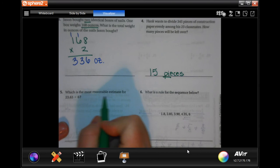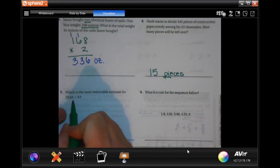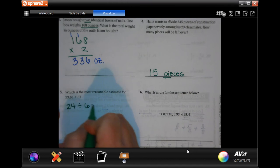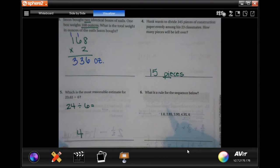Which is the most reasonable estimate for 23.63 divided by 6? Well I would round 23.63 to 24, and if we divided that by 6 we would get 4, because 4 times 6 is 24.